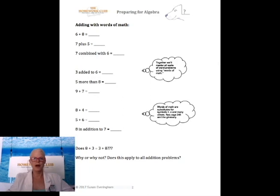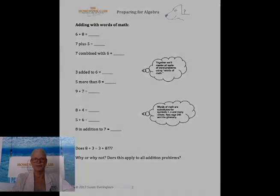Page two. The bubbles have tips and tricks in them for a better and deeper understanding of what you're learning on that particular page. Together, we'll learn lots of words of math. If you don't know a word, you can go to the glossary and look it up. Here on page two, six plus eight obviously equals 14. The challenge here is that we're taking away the plus sign and we're adding words of math: plus, combined with, added to, in addition to. The bottom of most of our pages has some kind of little challenge. This one asks: eight plus three equals three plus eight. Does that work? Think about it for all addition problems.